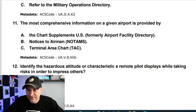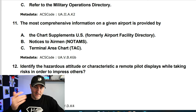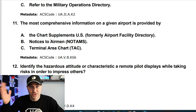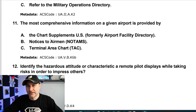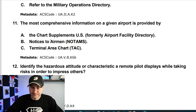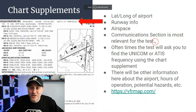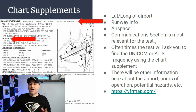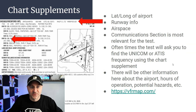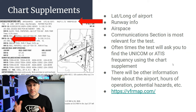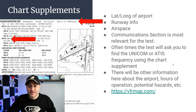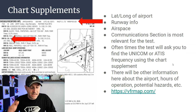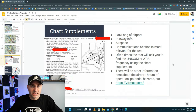The most comprehensive information on a given airport is provided by the chart supplement. The chart supplement has all sorts of really good information: latitude and longitude, runway information, airspace information, communication section, potential hazards, and lots more. All that stuff is going to be in the chart supplement for you. You can get this information from vrmap.com — that's where I generally get my stuff.